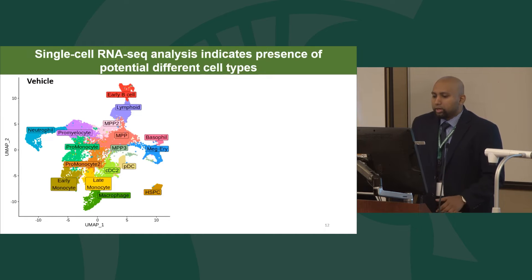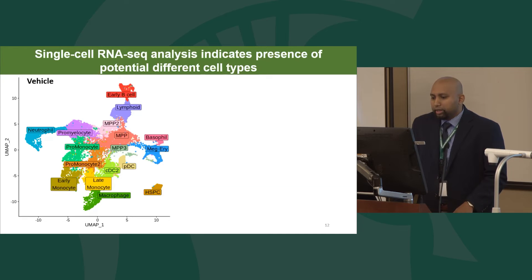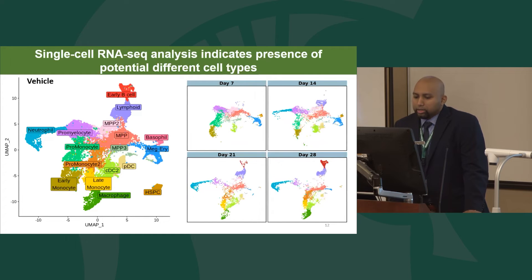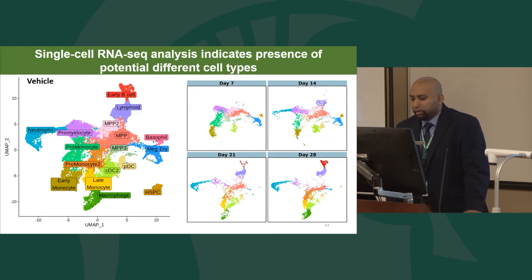Breaking down development over time, the earliest populations are the multipotent progenitor populations, along with an early monocyte cluster. On day 14, we see the emergence of a lymphoid population and a neutrophil cluster. By day 14, many progenitor populations decline to give rise to more mature cell types, and by day 28, this effect is accentuated even further.